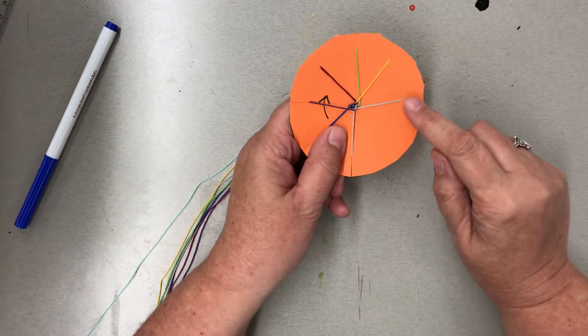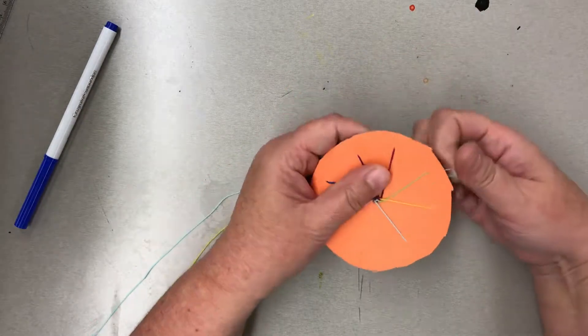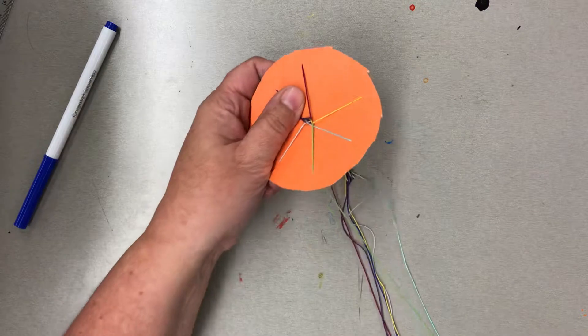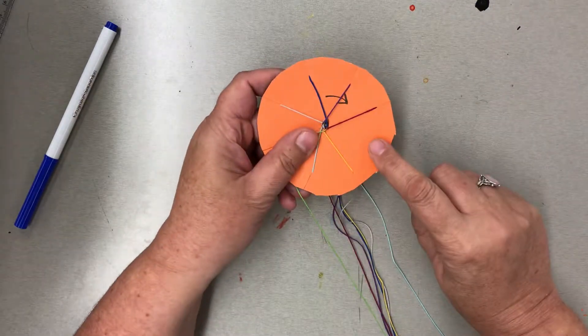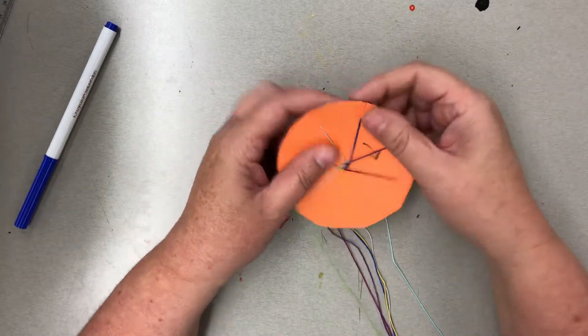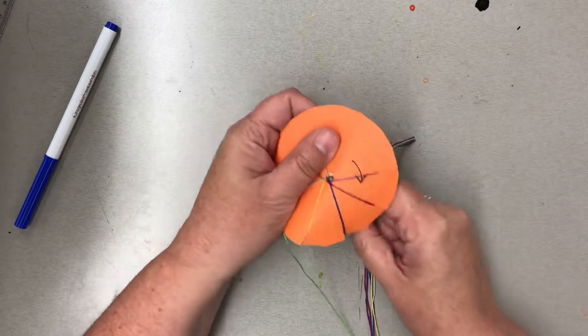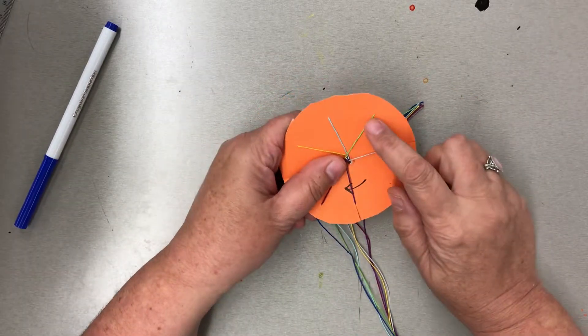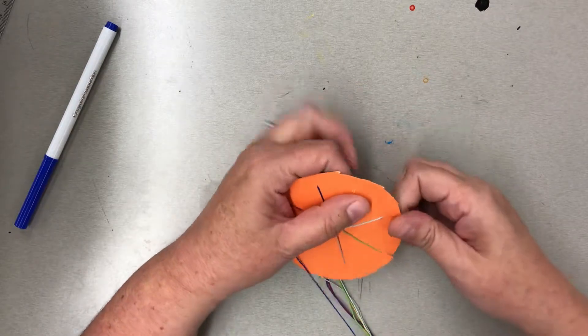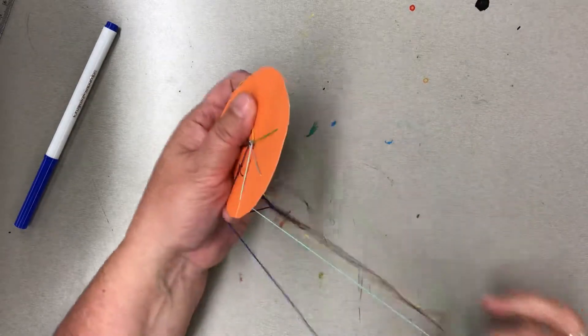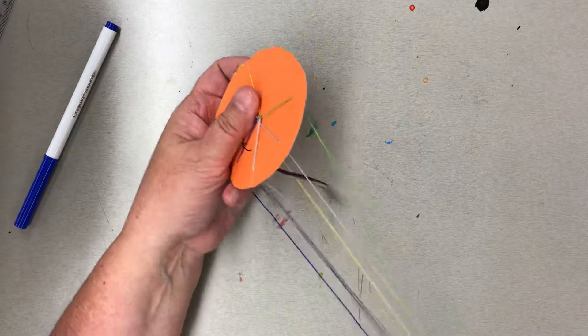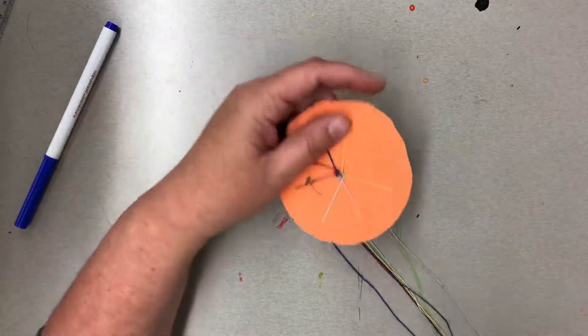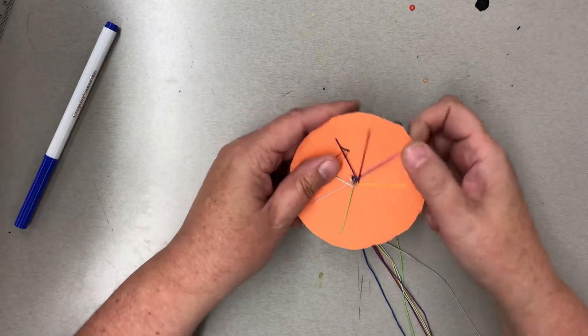Keep going with the pattern: zero, one, two, three. Make sure you straighten this out as you go. It's going to look like a jellyfish for a while.